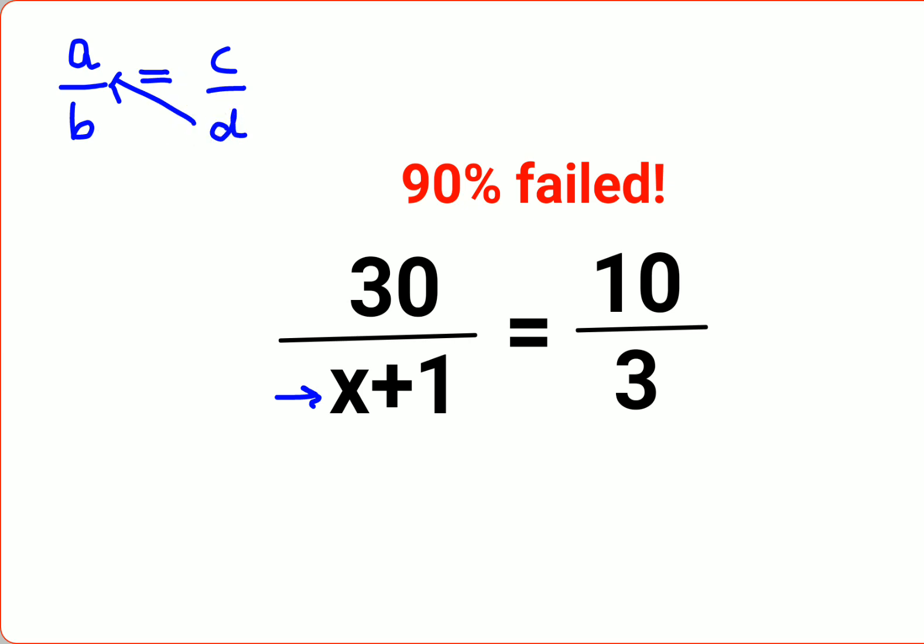Now how do we do this? If you don't understand cross multiplication, you can do it this way. Multiply both sides by d and then multiply both sides by b as well. So the b's are cancelling here and the d's are cancelling here. So basically you got a times d equals to c times b. This is one way of doing it.